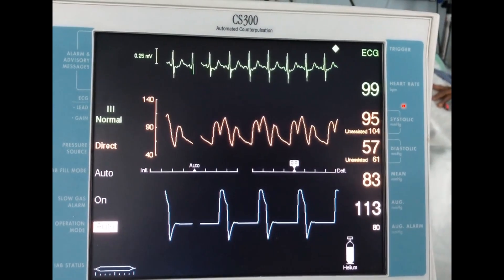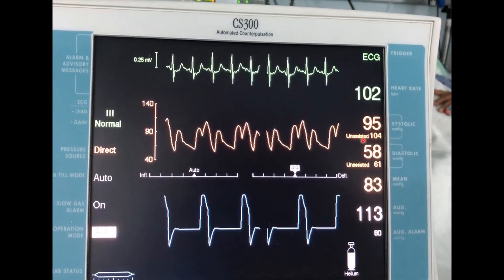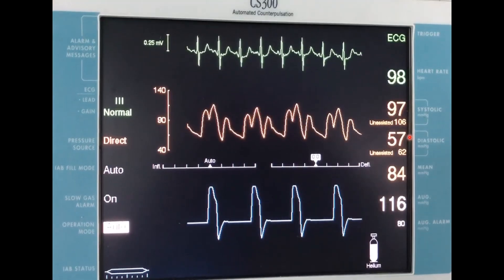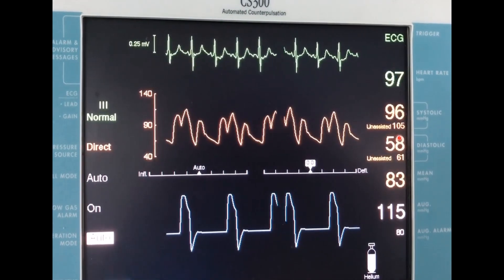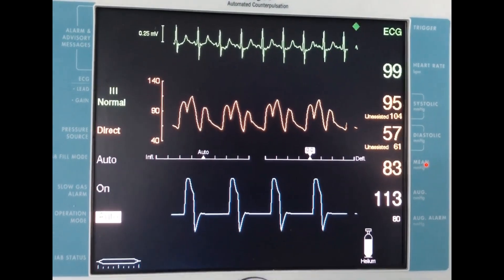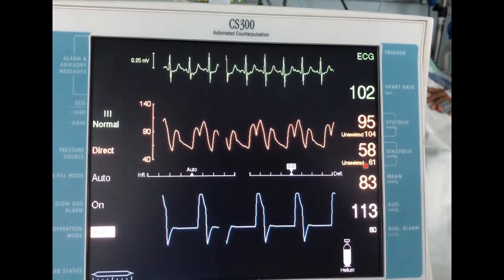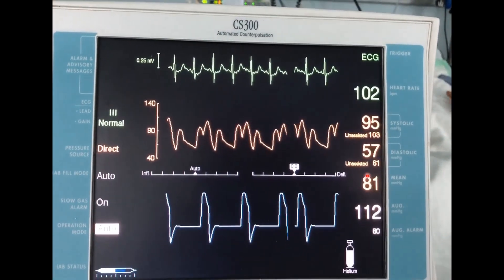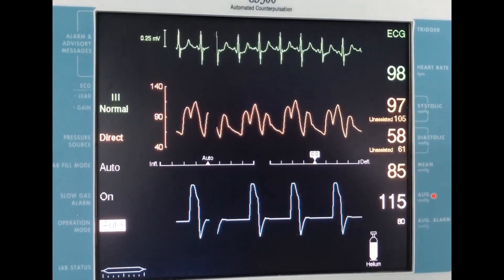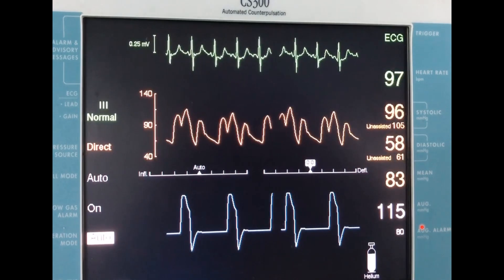So if we look at the console here, we will find systolic pressure, two systolic pressures: one assisted and one unassisted. Diastolic pressure, one assisted, one not assisted, mean arterial blood pressure, and here we will find augmented diastolic pressure.